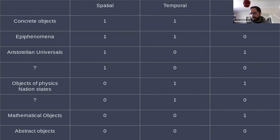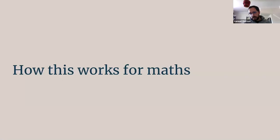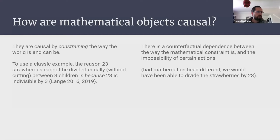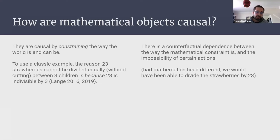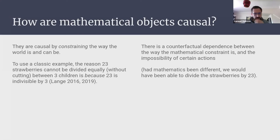That's the general idea of exotic objects — in-between objects that maybe possess these characteristics in different degrees and different arrangements, allowing for this kind of variation in object kinds. Now for the case study: mathematical objects. I've said they might be non-spatial, temporal, but causal. How can that be? Mathematical objects are causal in virtue of constraining the way the world is. The classic example — discussed by Lange — is that 23 strawberries cannot be divided equally between three children because 23 is indivisible by three.